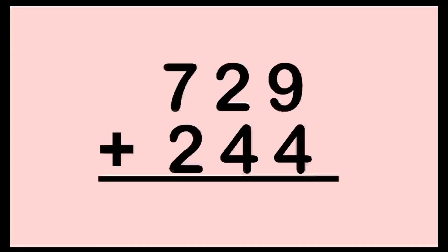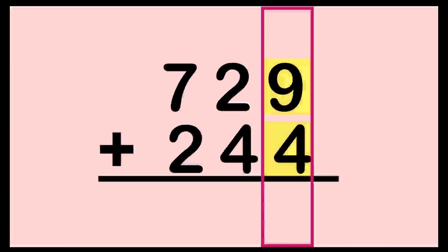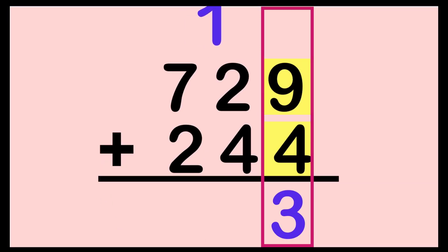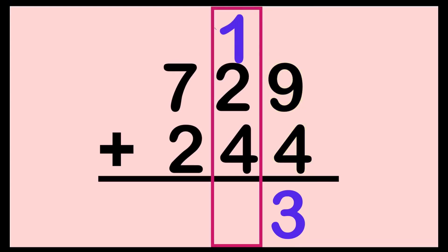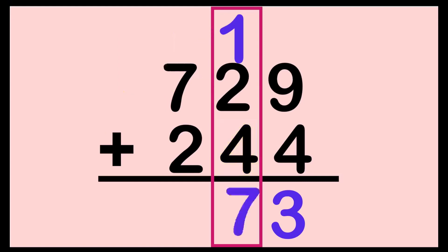Let's go now to the next example. How about if you have 729 plus 244? Again, we're going to start at the one's place. 9 plus 4 — put 9 on your mind, big number first: 9, 10, 11, 12, 13. We have 13 here. Next, we need to regroup one to the ten's place. Let's proceed now to the ten's place. 1 plus 2 — put 2 on your mind: 2, 3. We have 3. Then 3 plus 4 — put 4 on your mind, big number first: 4, 5, 6, 7. We have 7 here.